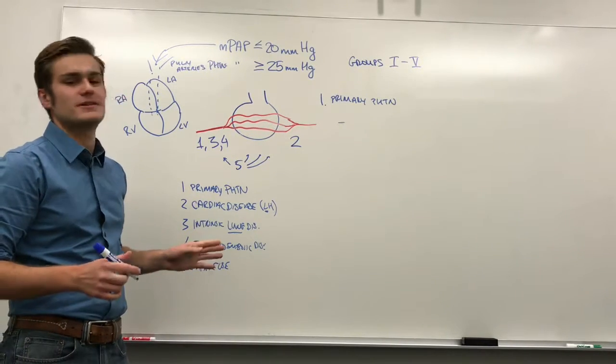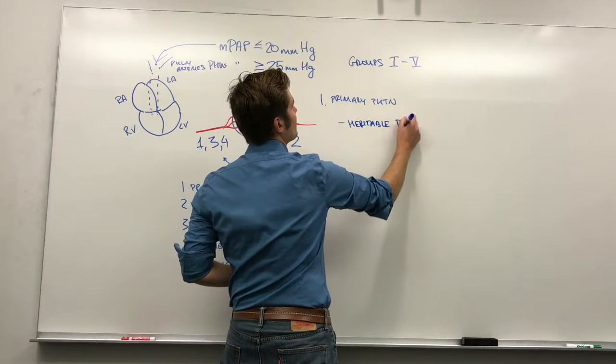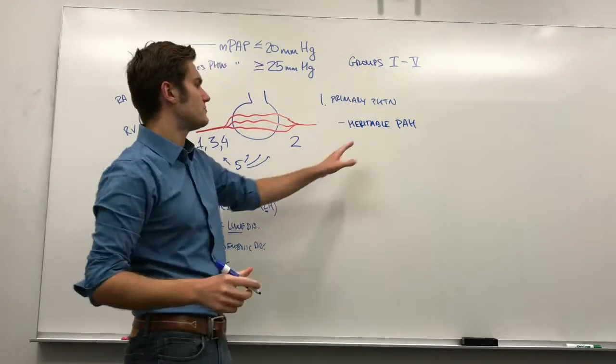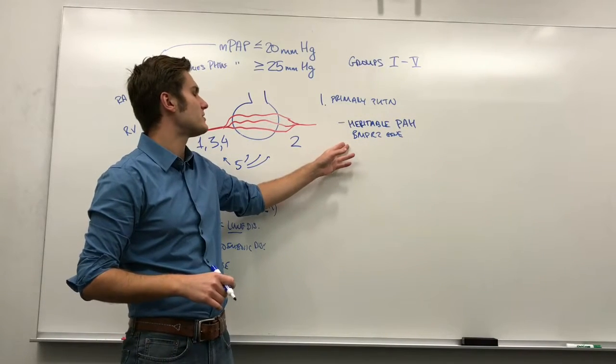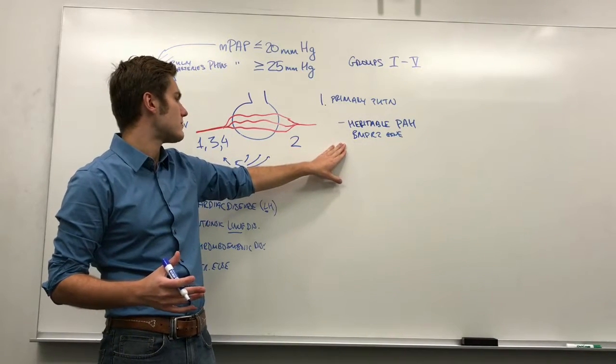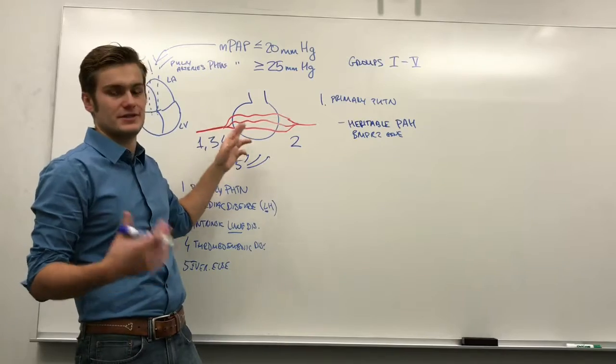So, what falls under this is, let's start with hereditary pulmonary arterial hypertension. This is a mutation in the BMPR2 gene. It's inherited in the autosomal dominant fashion. And what this essentially causes is it causes changes in the pulmonary arteries, such that there's hyperplasia of the intimal layer and there's hypertrophy of the medial muscular layer.